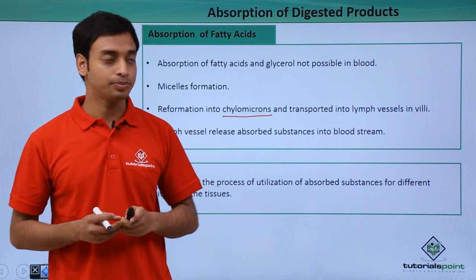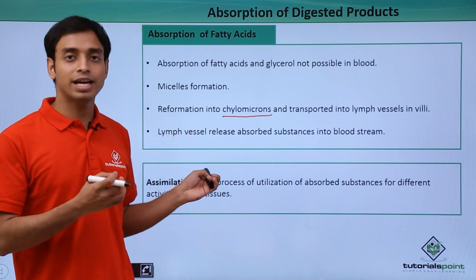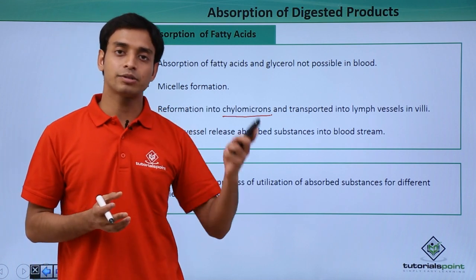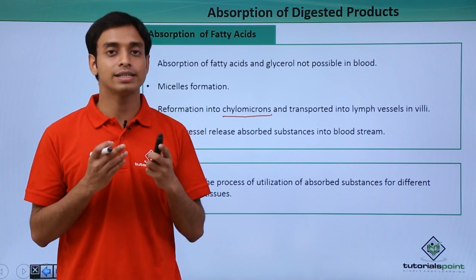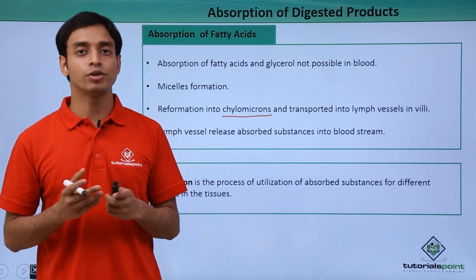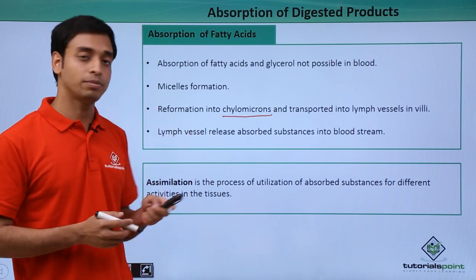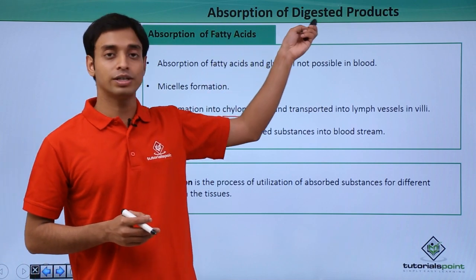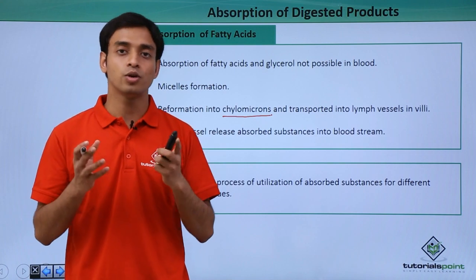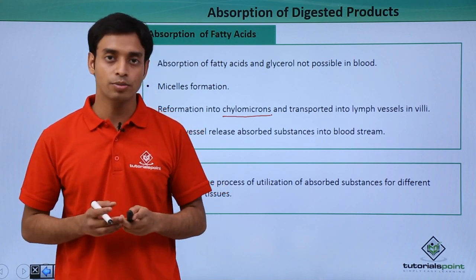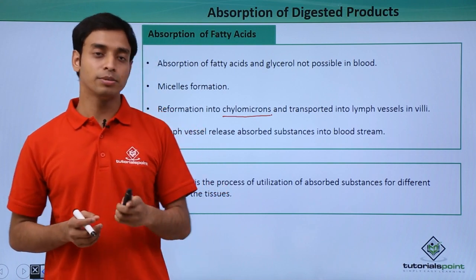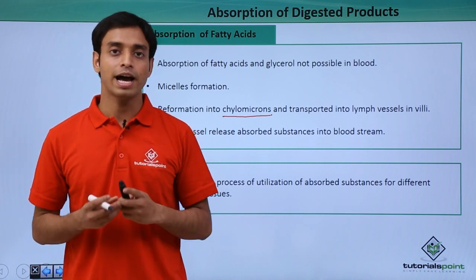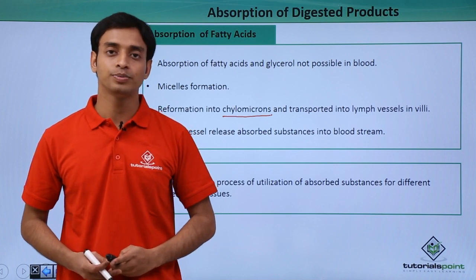After absorption into the bloodstream, these nutrients are utilized at specific sites in the body such as cells and tissues. This process of utilization of absorbed nutrients is known as assimilation. In this video we have discussed the absorption of digested products, the various ways and processes by which they are absorbed, and the terminology of assimilation.